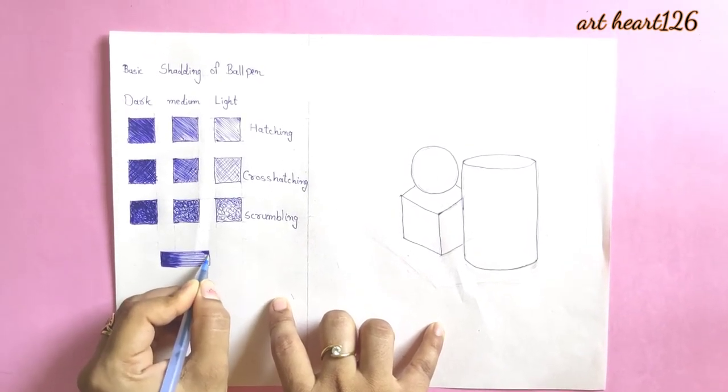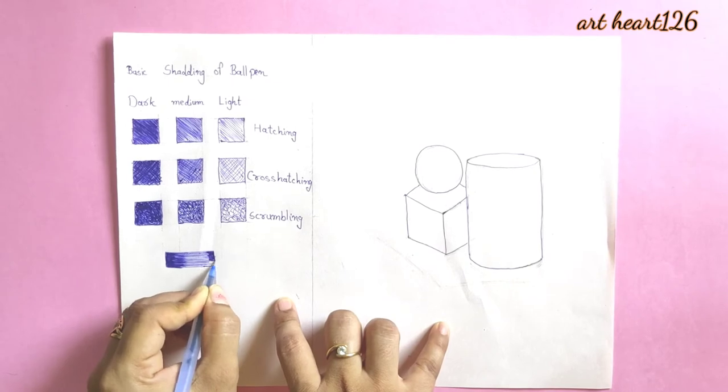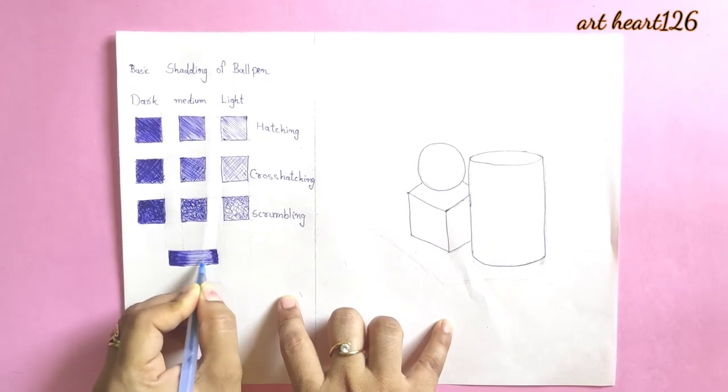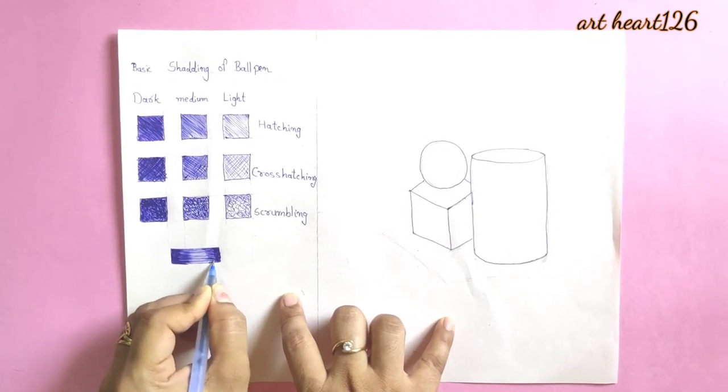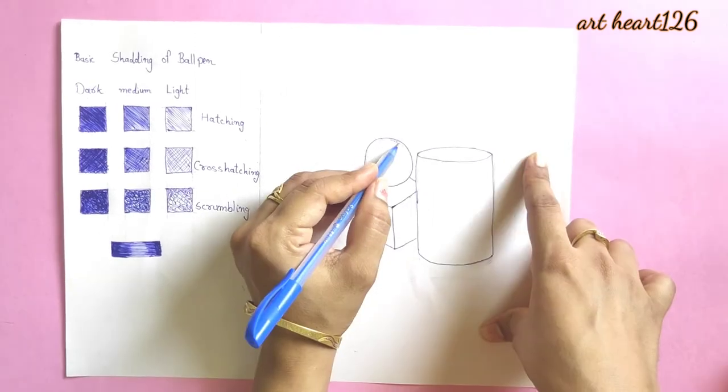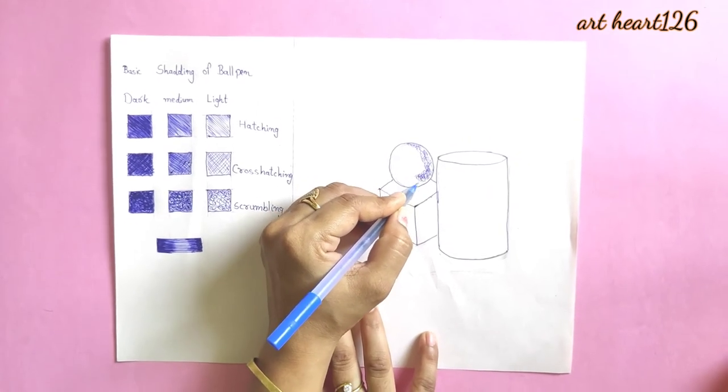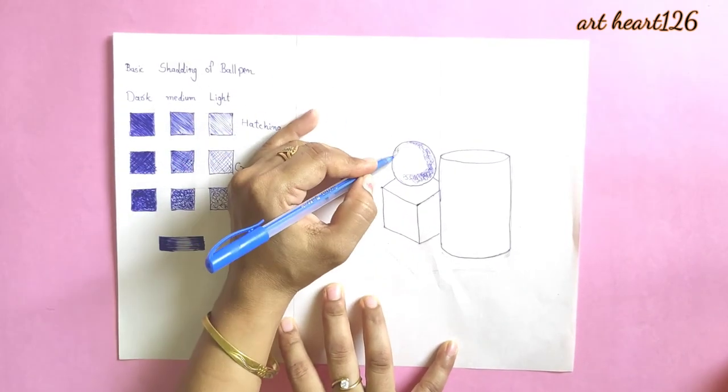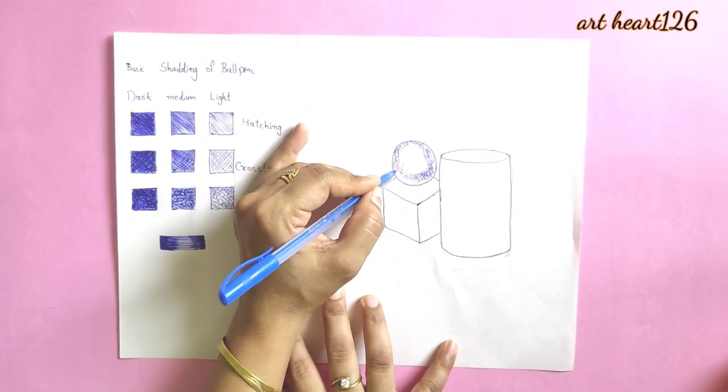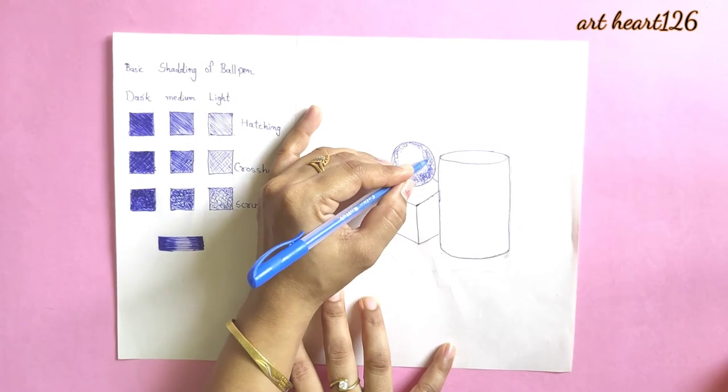Again dark tone - scrambling in the circle. First use light tone then dark tone, it would be easy for you.